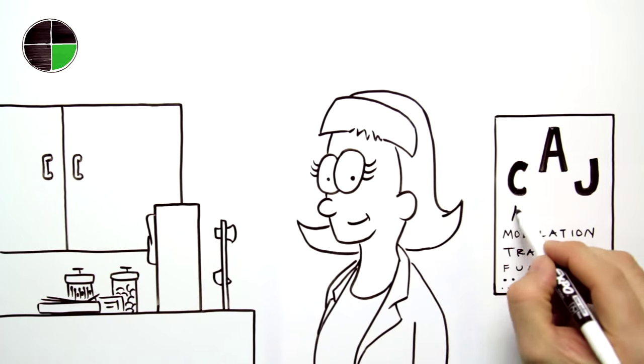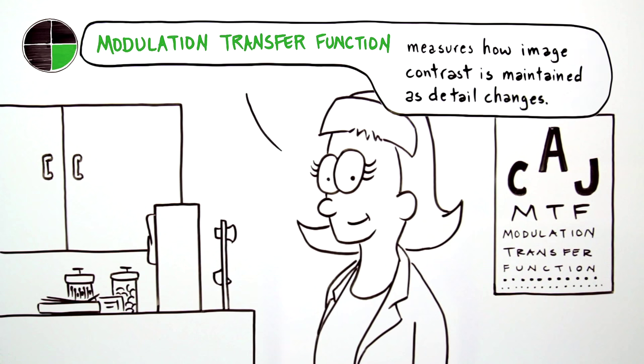Our third benchmark, modulation transfer function, measures how the image contrast, or sharpness, is maintained as detail changes.